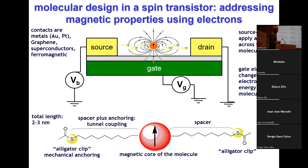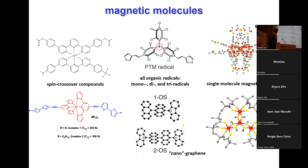The molecules we have been working on I've divided into three classes: spin crossover compounds, radicals — both all-organic radicals and others — and nanographene. You've seen some of these molecules in the talk from Diego. I will not go into single molecule magnets; we've done a lot of work on those, especially five to ten years ago. They are very complicated systems with many energy levels, so I would like to concentrate more on these other molecules.